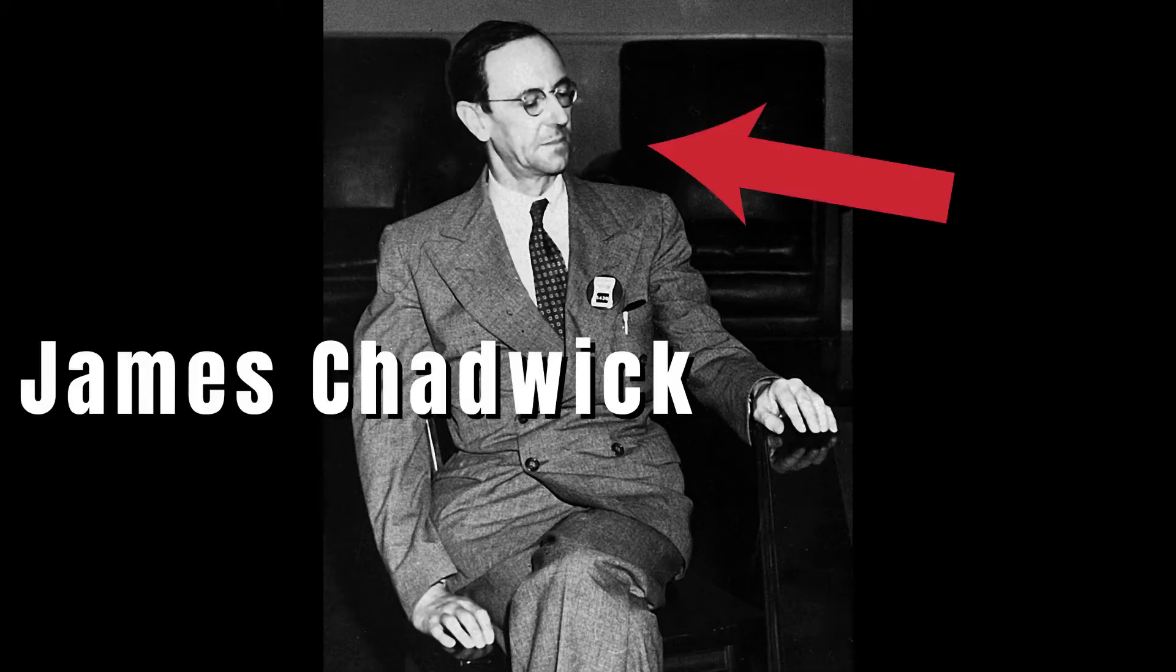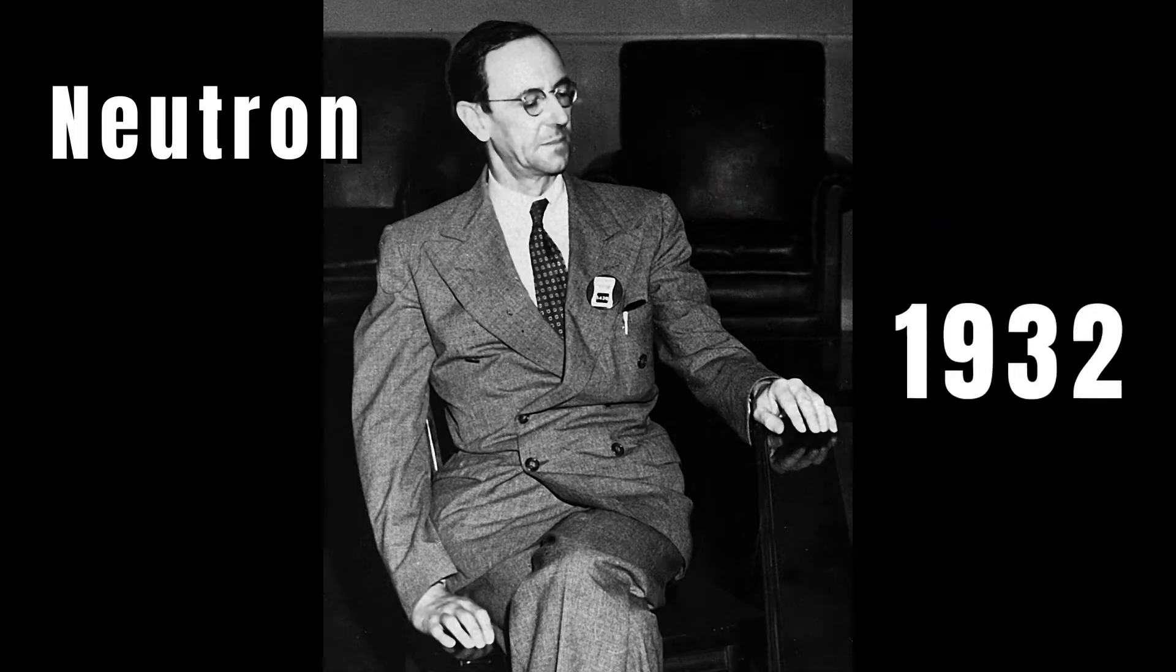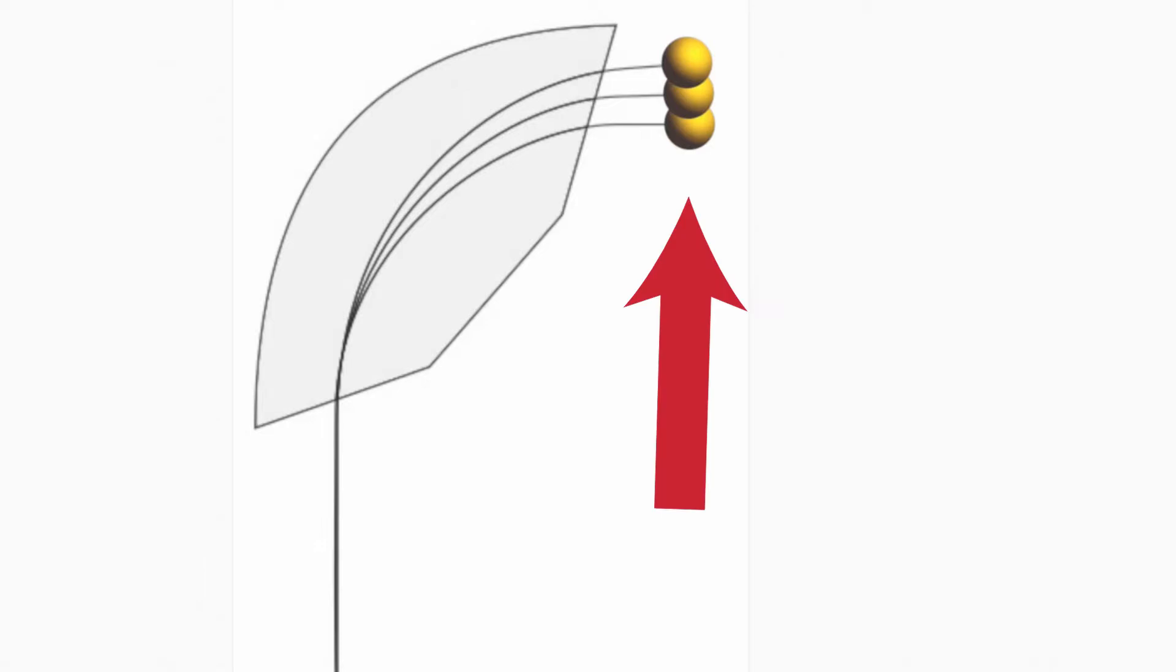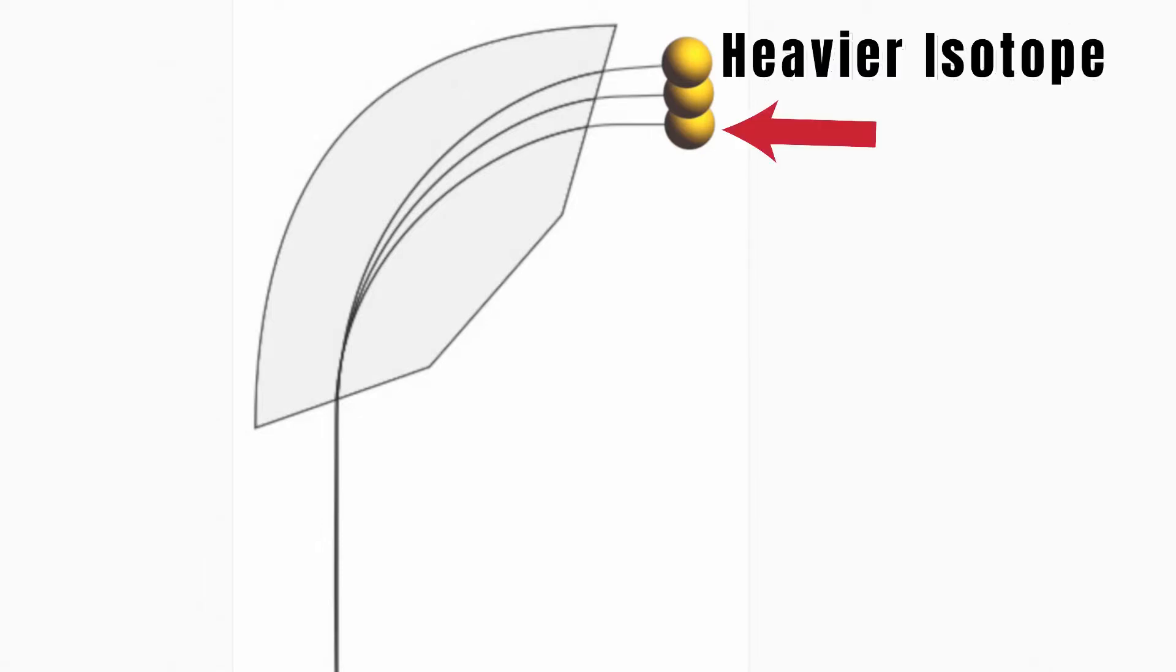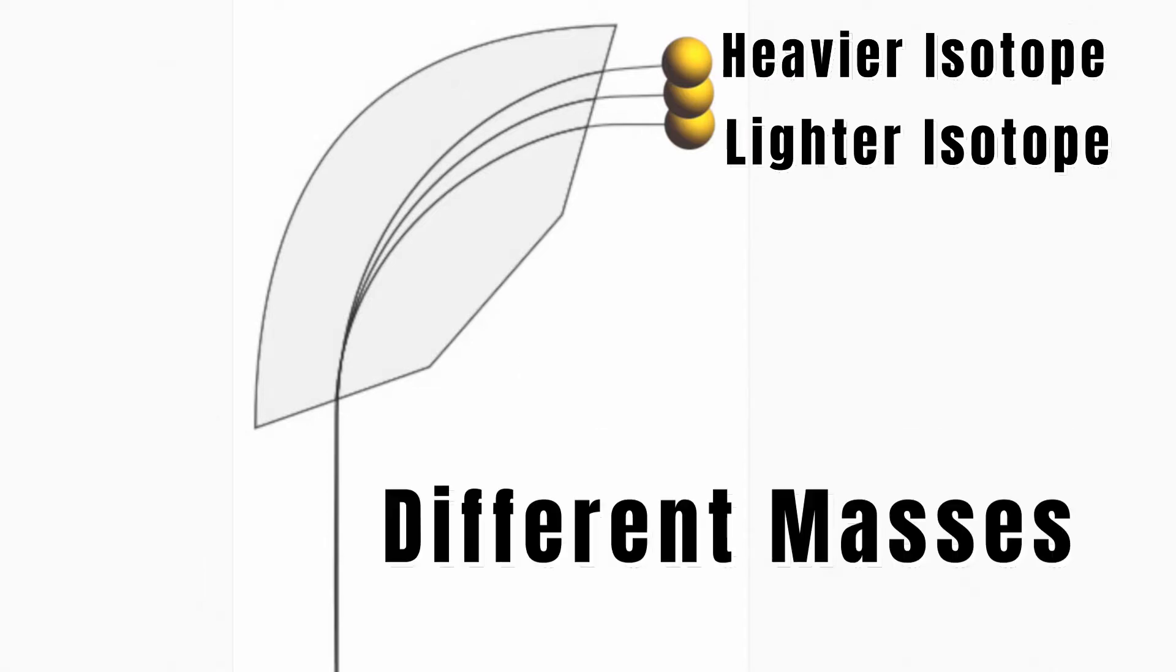It wasn't until James Chadwick discovered the neutron in 1932 that scientists could fully explain why the deflection was different. You see, if isotopes had more neutrons, they would be deflected less since they were heavier. Isotopes with less neutrons were deflected more since they were lighter. We had discovered atoms of the same element that had different masses.